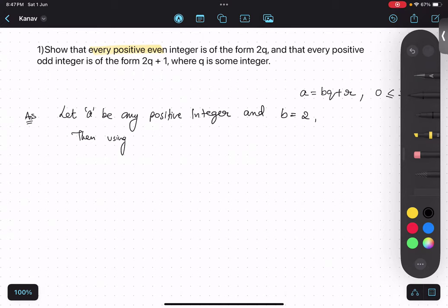Then, using Euclid division lemma, I will write down the formula. A equals to bq plus r, where r is greater than equals to 0 and less than b.